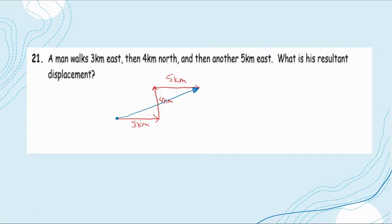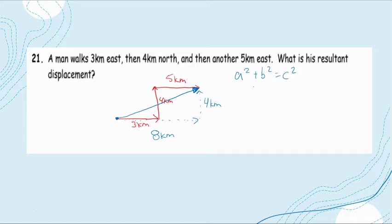If we look at this as a right triangle, my x side is going to be 8 kilometers (3 + 5), and my y side is going to be 4 kilometers. So using a² + b² = c², our resultant c equals the square root of 8² plus 4², which gives us 8.9 kilometers.